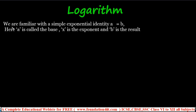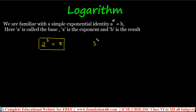We are familiar with the simple exponential identity: a to the power x is equal to b, where a is the base, x is the exponent, and b is the result. For example, 2 to the power 3 is equal to 8. Similarly, 3 to the power 2 is equal to 9, meaning 3 into 3 is 9. Here 3 is the base, 2 is the exponent, and 9 is the final result.